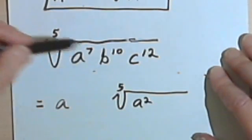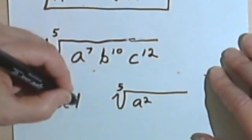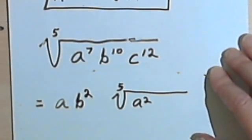Looking at the b to the 10th, dividing 10 by 5, it goes evenly two times. So b to the 10th is just going to turn into b squared.